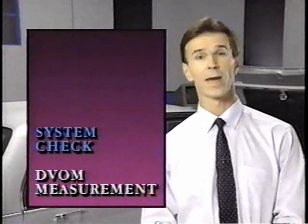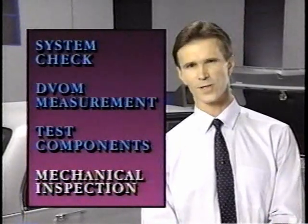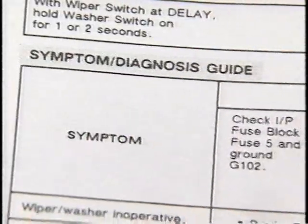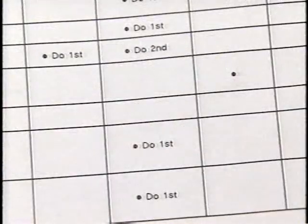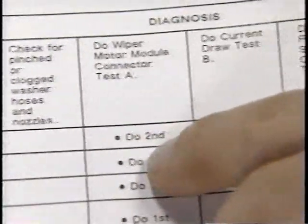Troubleshooters have a very useful way of thinking about wiper system diagnosis. They concentrate on what wiper systems have in common. In a sense, all wiper tests fit into a few general categories: performing a system check to confirm inoperative functions, DVOM measurements of voltage, current, and resistance, using a fused jumper to isolate and test components, and mechanical inspections to locate physically damaged parts. The troubleshooter's key to wiper diagnosis consists of understanding what the various tests check for and knowing the order in which the tests are performed. The symptom diagnosis chart shows that depending on the symptom, wiper tests are performed in different orders, and not all wiper tests are performed all of the time.